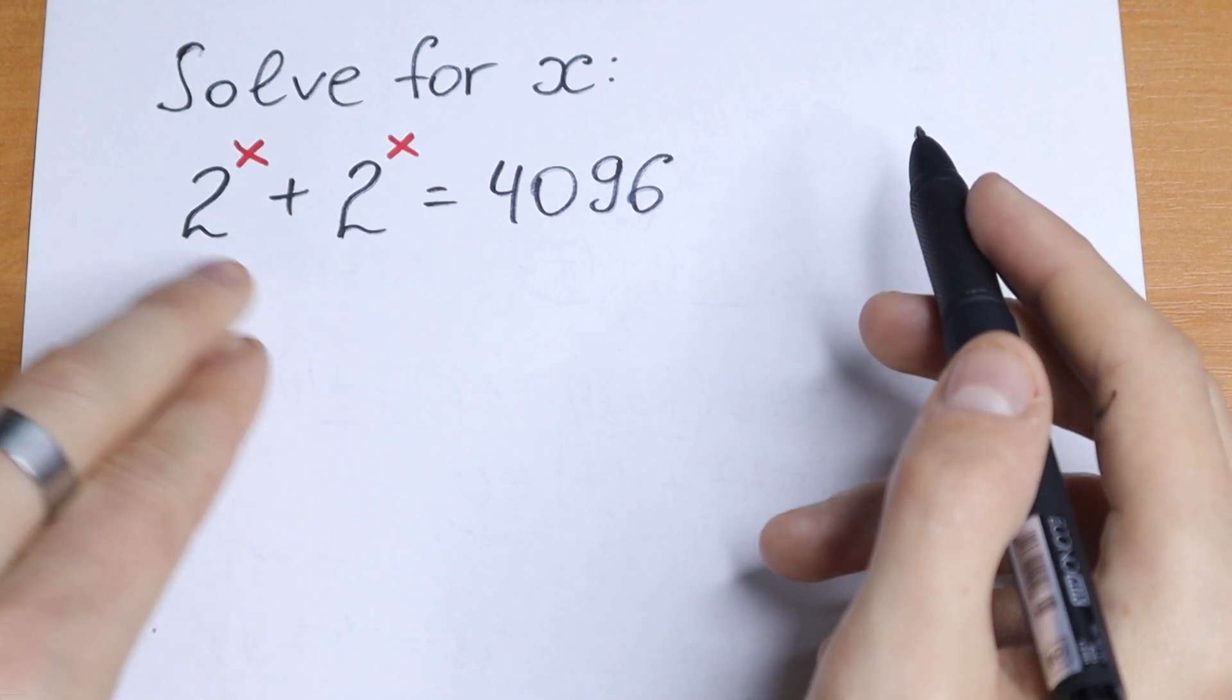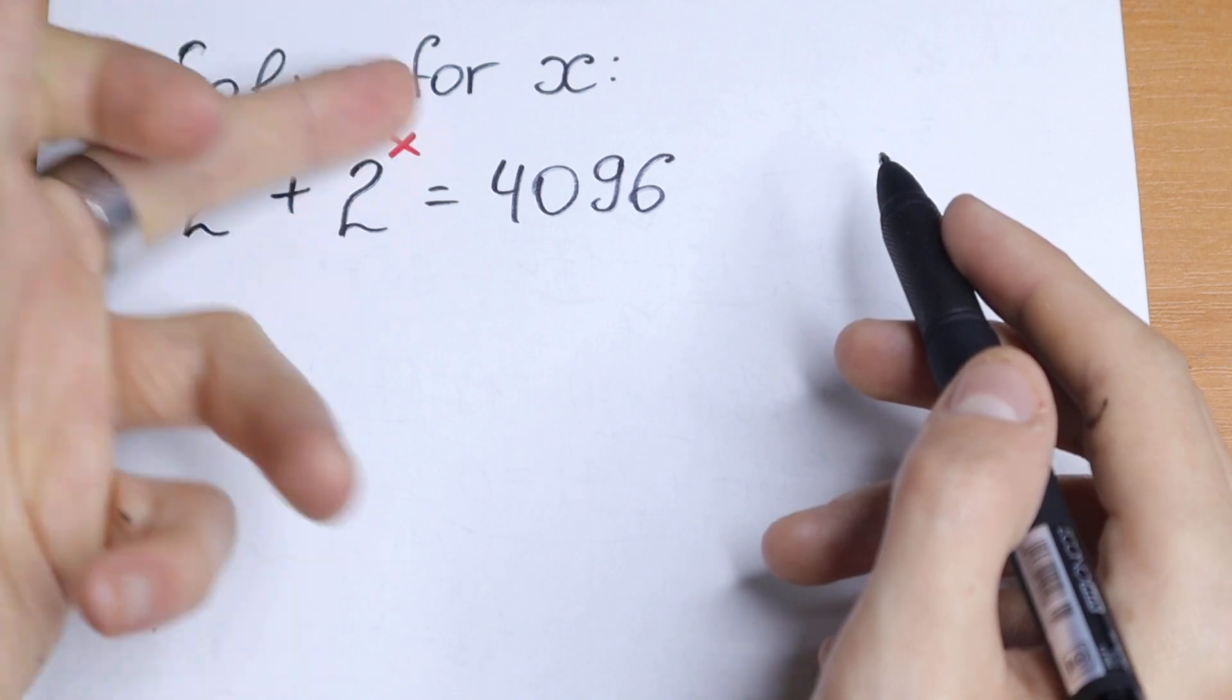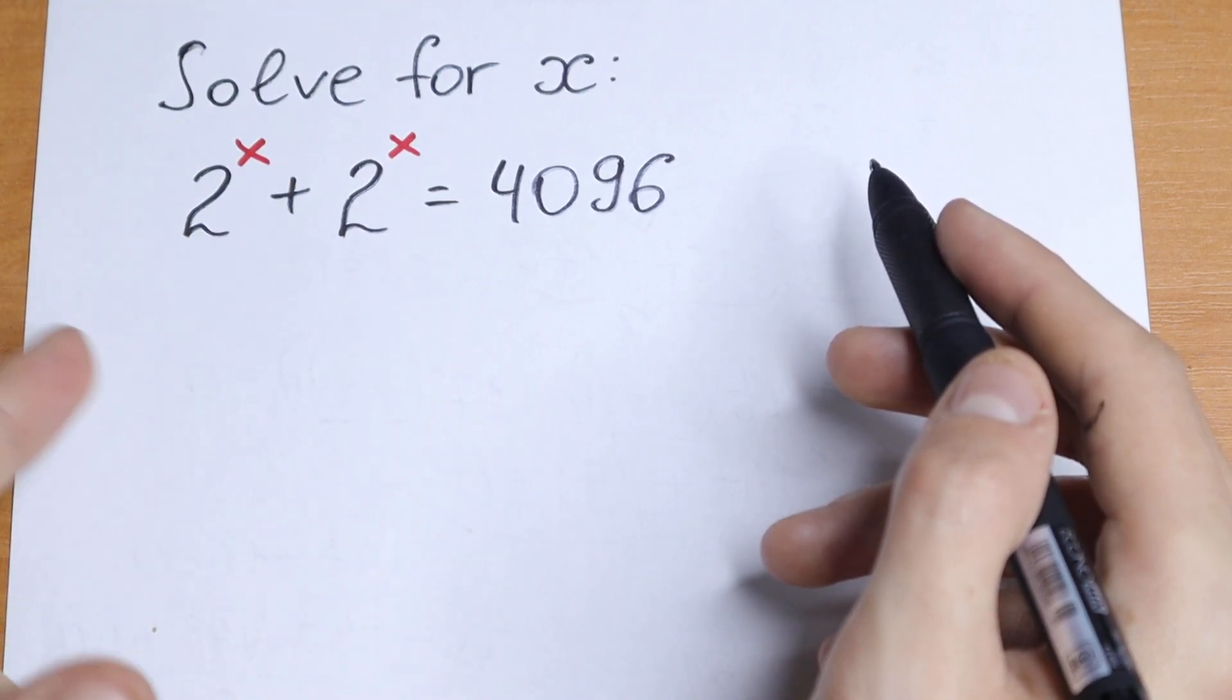These elements are the same, so this looks like x plus x, but without x we have 2 to the power x plus 2 to the power x. If we have x plus x and add this, we will have 2x.